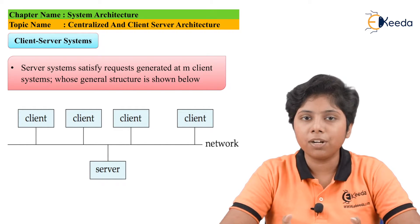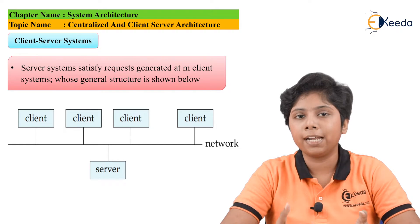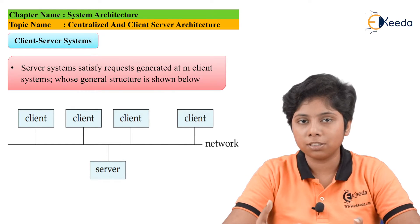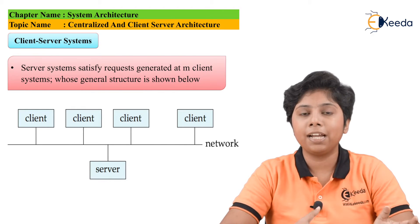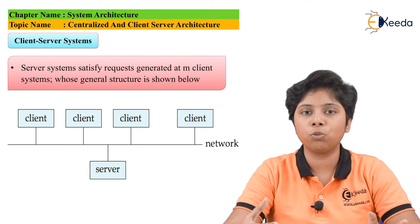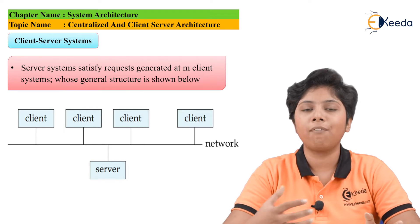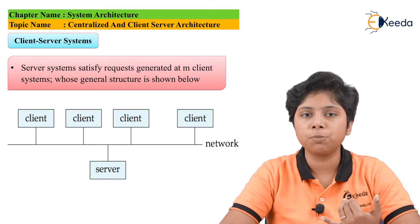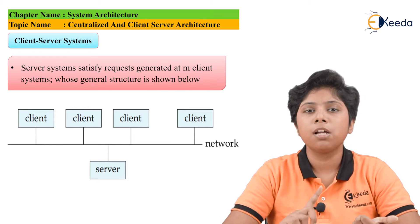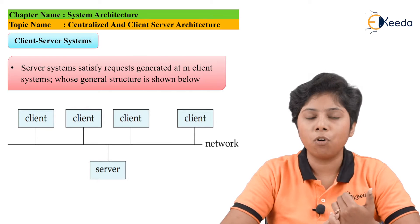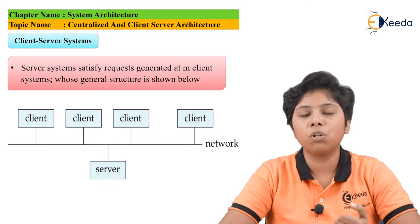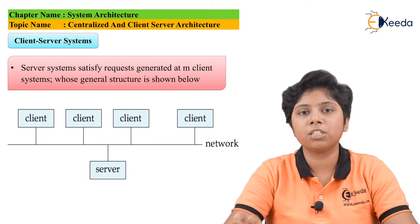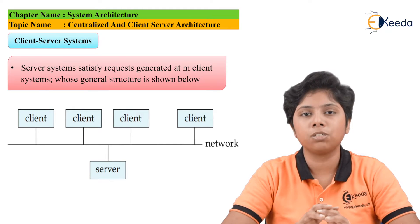If it is a data server, the client can directly update the data. If it is a transaction server, various processes are attached to control data access. A system of message passing, mutual exclusion, and semaphores is used to control each process on the client connecting to the server.